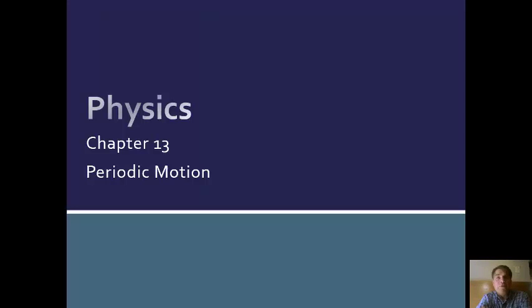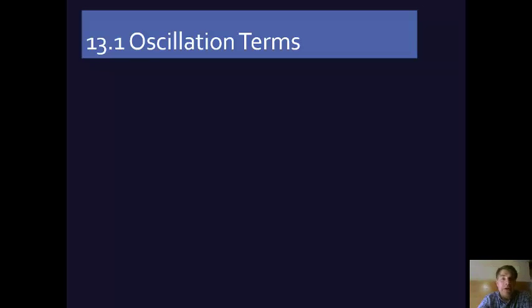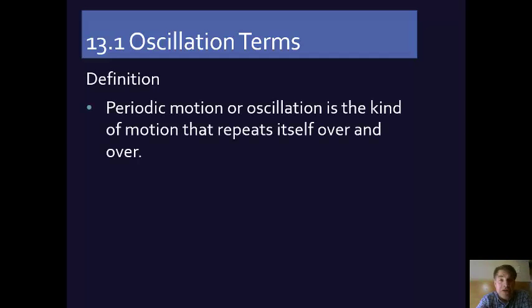The first section of Young and Freedman's Chapter 13.1 basically gets some terms, the definitions of some basic terms relating to oscillation on the table. So for example, what is periodic motion or oscillation?